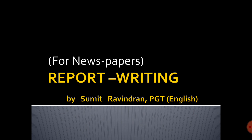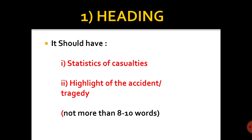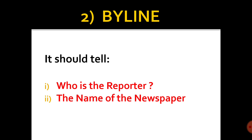Students, this is about report writing for newspapers. I'm Sumit and I'm going to come up with a 10-point formula so that you would never forget it. The first point is the heading, and the heading should have the statistics of casualties — the number of people dead and an estimate of the injured. The highlight of the accident should be there and it should not be more than 8 to 10 words.